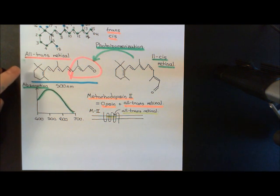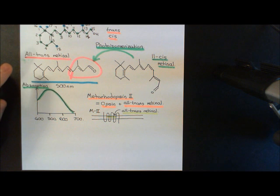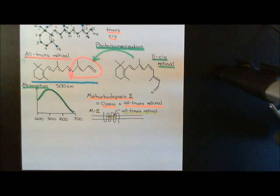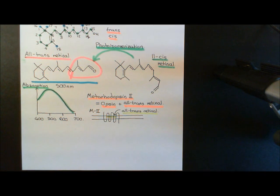When you've got all-trans retinal bound to the opsin, the opsin will want to be in a different conformation to when it was bound to 11-cis retinal. So the G-protein coupled receptor is going to change conformation, and it's now going to interact with downstream signaling molecules inside the cytoplasm of the cell to trigger an electrical signal, and it's that downstream signaling pathway that I now want to go over to.